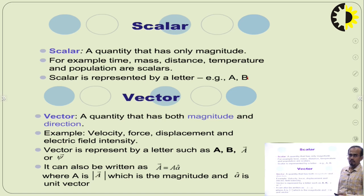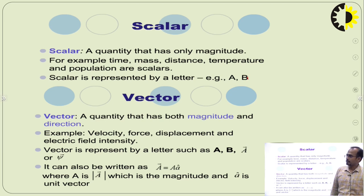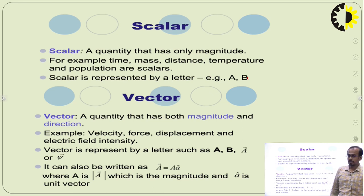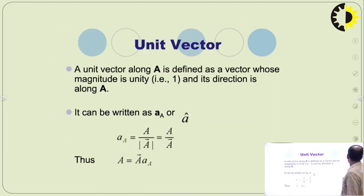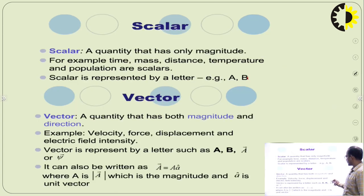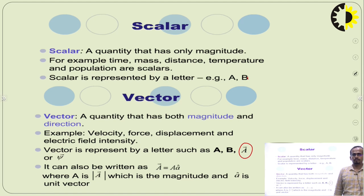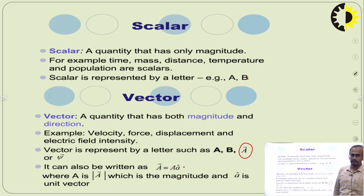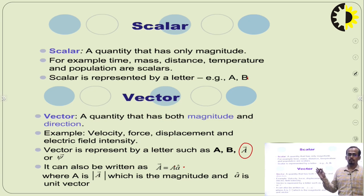A vector is a quantity that has magnitude as well as direction. Examples are velocity, force, displacement, and electrical intensity. We can represent a vector quantity in bold or with an arrow in capital letters. It can be written as vector A equals A times unit vector A-cap, where the magnitude of vector A is written as mod of A.